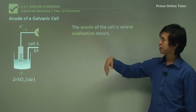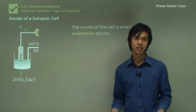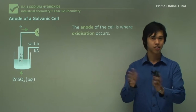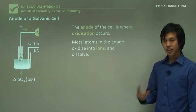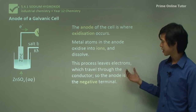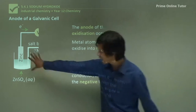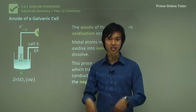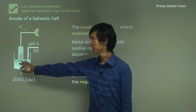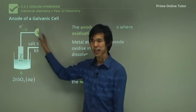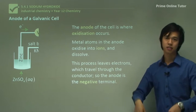On the left-hand side we have the anode — the anode is where oxidation occurs. There's an old saying: 'an ox, red cat' — oxidation at the anode, reduction at the cathode. Metal atoms in the anode oxidize into ions and then dissolve, leaving electrons which travel through the conductor, so the anode is the negative terminal. The zinc metal releases electrons and becomes the zinc ion, which goes into solution. Over time you'll notice the zinc metal decreasing in size.